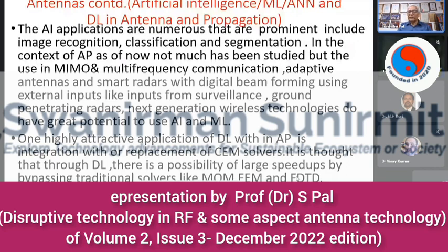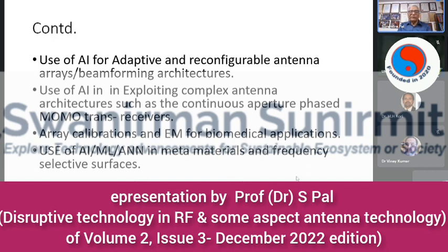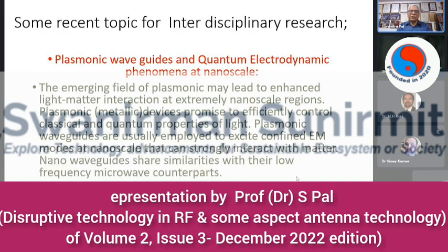One highly attractive application of deep learning in antenna propagation is integration with, or replacement of, CEM solvers — computational electromagnetic solvers. It is thought that deep learning has the possibility of large speed-ups by bypassing traditional solvers like Method of Moments, FEM, FDTD, etc. Use of AI for adaptive and reconfigurable antennas; use of AI in exploiting complex antennas and MIMO transceivers; array calibrations; EM for biomedical applications; use of AI, ML, and ANN in metamaterials and frequency selective surfaces; plasmonic waveguides and quantum electrodynamics phenomena at nanoscale — these are emerging interdisciplinary fields. Electronic surfaces, finite differences, and the study of mixed-coordinate polarizations are all on the research horizon.